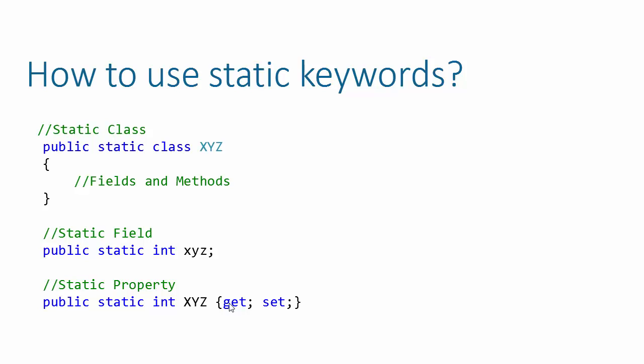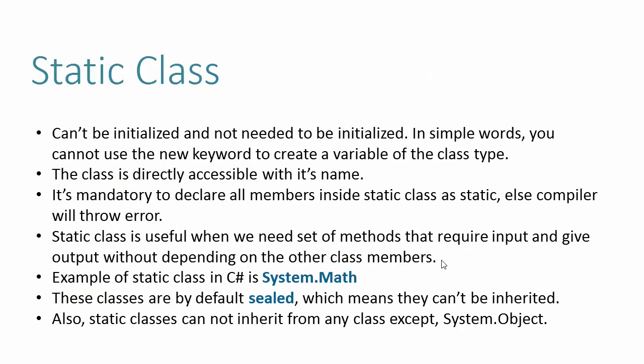A static class cannot be initialized and does not need to be initialized, because whenever we mark something as static the memory is already allocated to it — so there is no point in using the new keyword to create an instance. Since we cannot create an instance, the static class is directly accessible by its name.